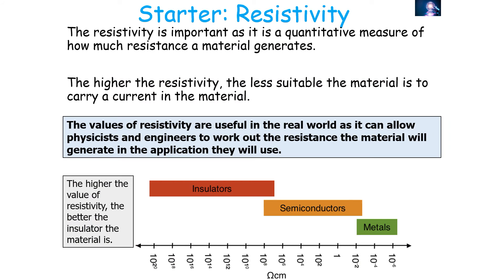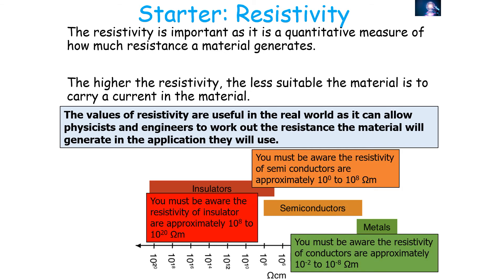Resistivity is a quantitative measure of how much resistance a material generates. The higher the resistivity, the less suitable the material is to carry a current. The values of resistivity are useful in the real world, allowing physicists and engineers to work out the resistance a material will generate in an application. The higher the value of resistivity, the better an insulator the material is. Insulators have an approximate resistivity between 10⁸ and 10²⁰ ohm metres; semiconductors approximately 10⁰ to 10⁸ ohm metres; and metals or conductors approximately 10⁻² to 10⁻⁸ ohm metres.